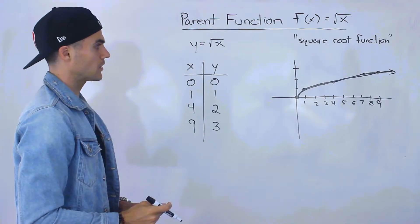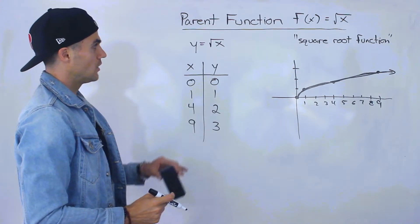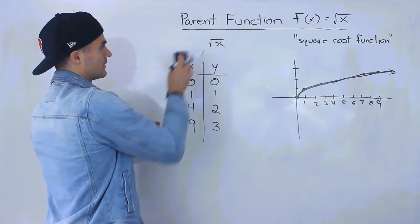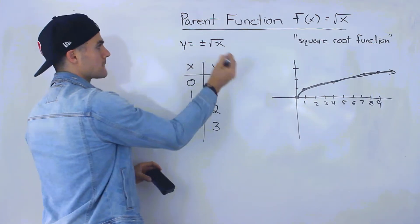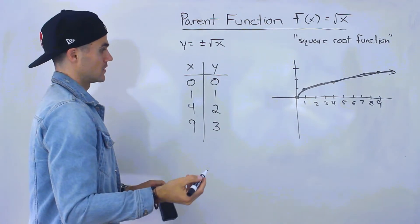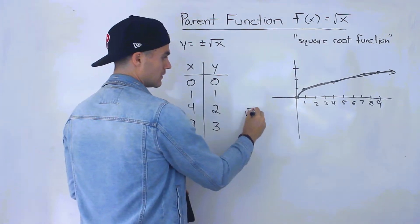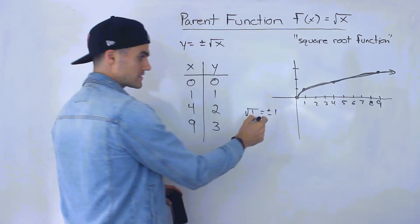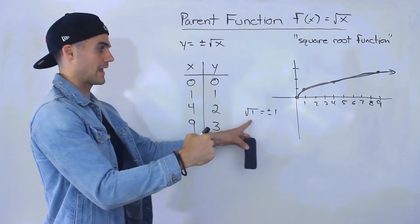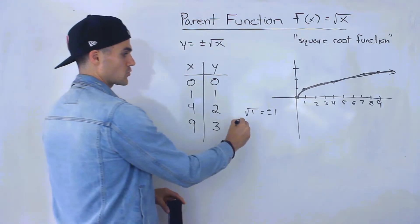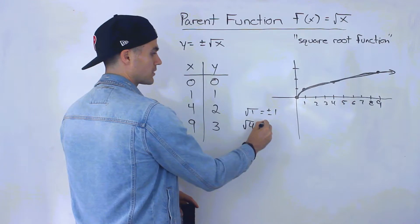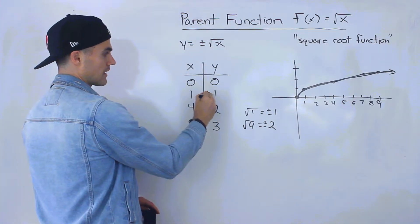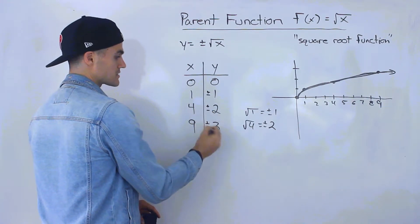Now one thing I want to mention here is notice that the square root of a number technically should be plus or minus. So for example, the square root of 1 is technically plus or minus 1 because 1 to the power of 2 gives us 1 and negative 1 to the power of 2 gives us 1 as well. Or the square root of 4 technically should be plus or minus 2. So why did we only put positives here? Because technically they could be plus or minus 1, plus or minus 2, plus or minus 3.